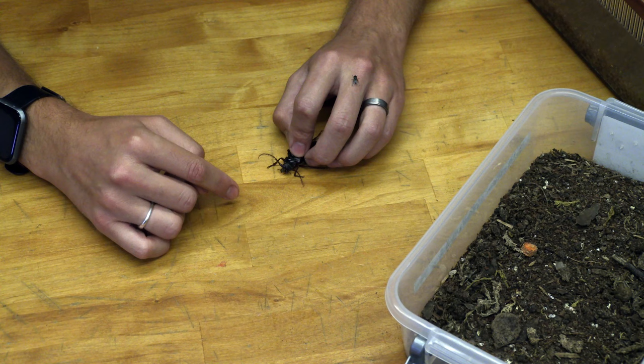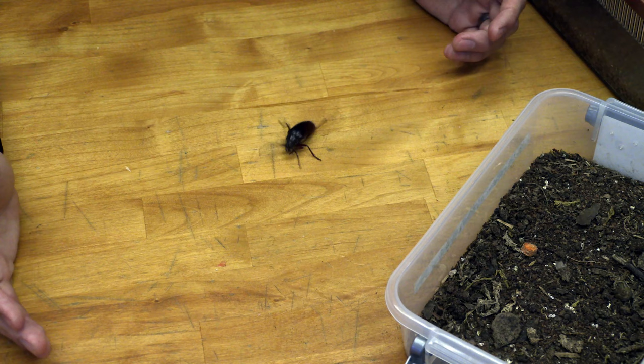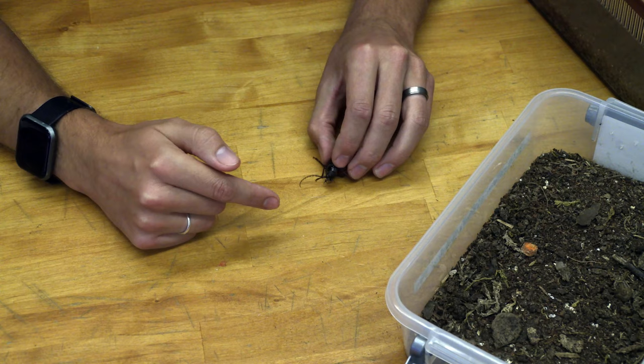This one is about 1.75 inches long or about 45 millimeters. Typically the prionis are going to be smaller than the ponderous wood borers which I'm going to show you in just a second.